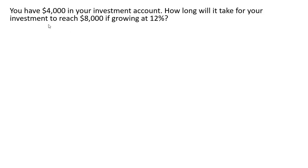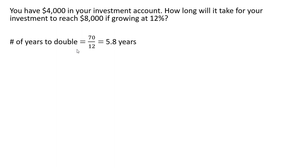Let's do some other examples. You have $4,000 in your investment account. How long will it take for your investment to reach $8,000 if growing at 12 percent? This is a doubling, so we can use the rule of 70. 70 divided by 12, which is the annual growth rate, will get about 5.8 years. So it'll take about 5.8 years for $4,000 to turn into $8,000 if growing at this interest rate.